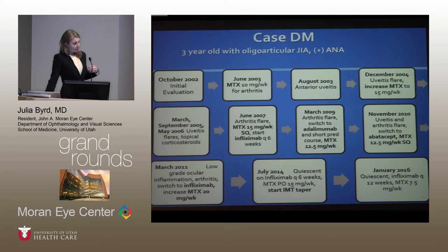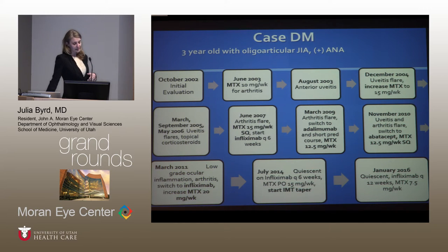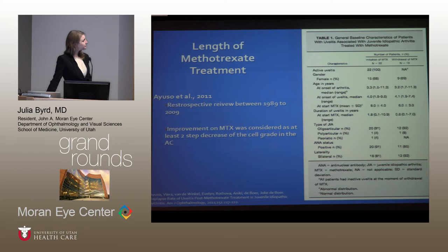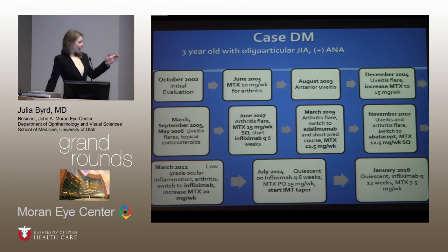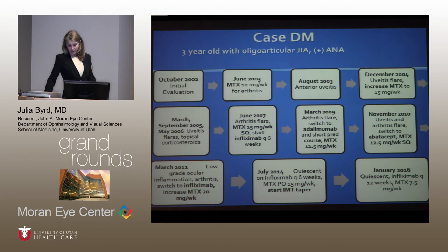In March of 2011, he continued to have low-grade ocular inflammation and flare-ups of arthritis. The decision was made to switch back to infliximab because, looking back at his disease course, it had seemed fairly effective — more effective in controlling his disease than abatacept or adalimumab. His methotrexate was increased to 20 milligrams a week. After that switch, he had a good response, achieved quiescence, and has not had any ocular inflammation since.